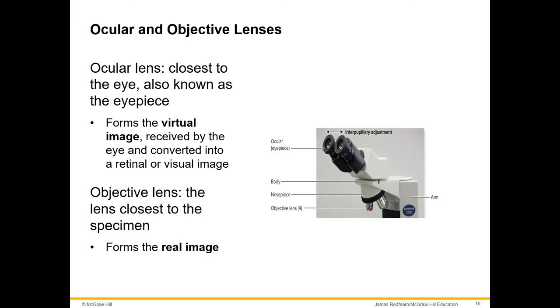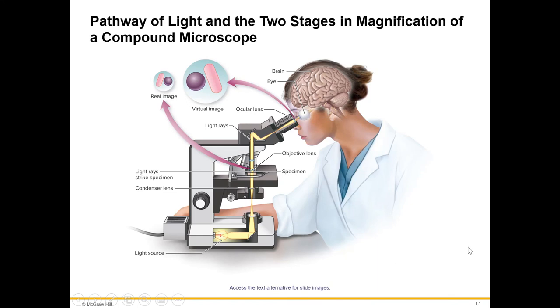The ocular lens is the lens closest to the eye, also known as the eyepiece. This forms the virtual image that's received by the eye and converted into a retinal or visual image. The objective lens is the lens closest to the specimen and forms the real image. Ocular lens is up here, objective lens is down here.